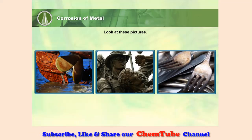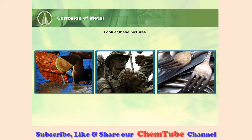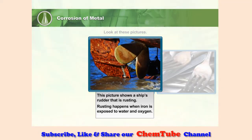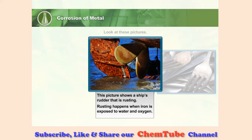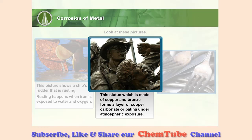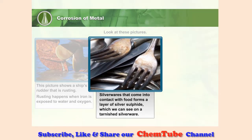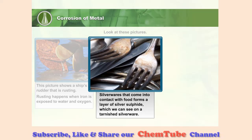Look at these pictures. What happened to these metals? This is called corrosion. This ship's rudder, which is exposed to sea water, corroded. The statue, which is made of copper and bronze, corrodes when exposed to air and also water from the rain. The silver spoon and fork is tarnished, meaning it is no longer shiny, so the silver has corroded.